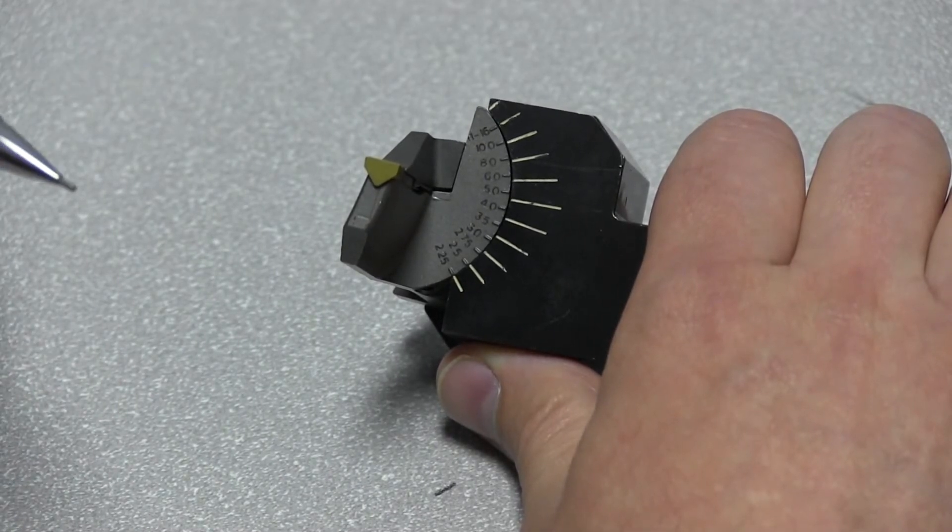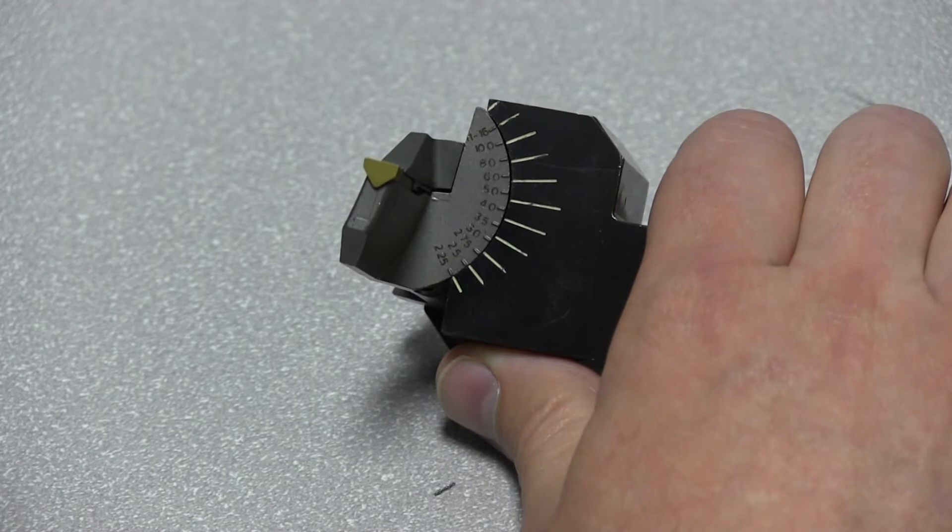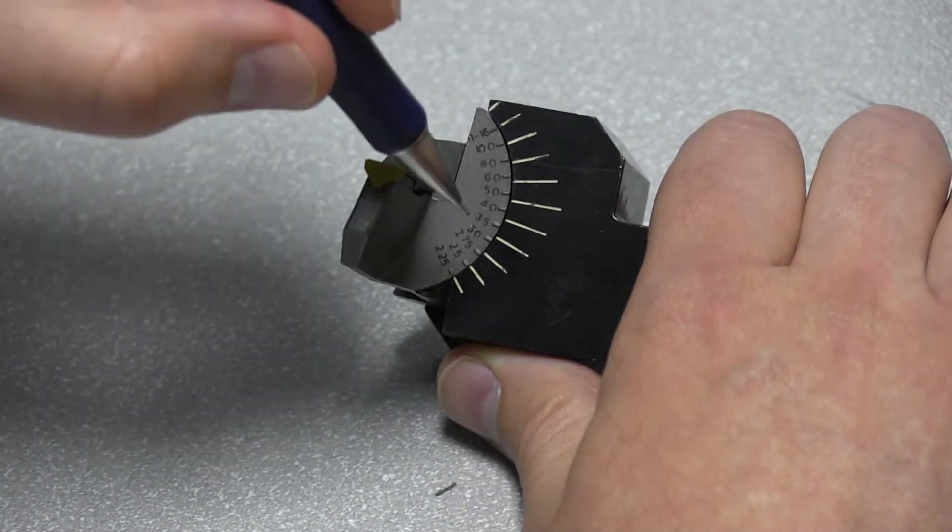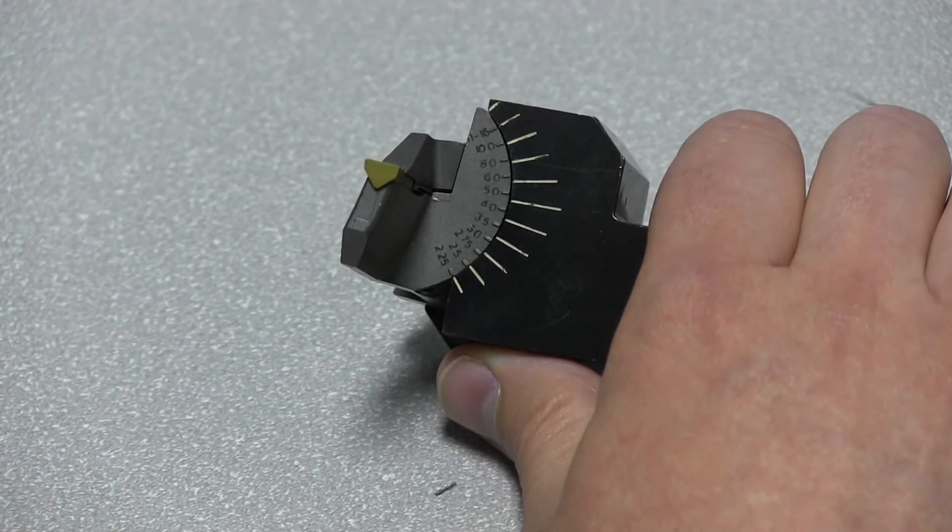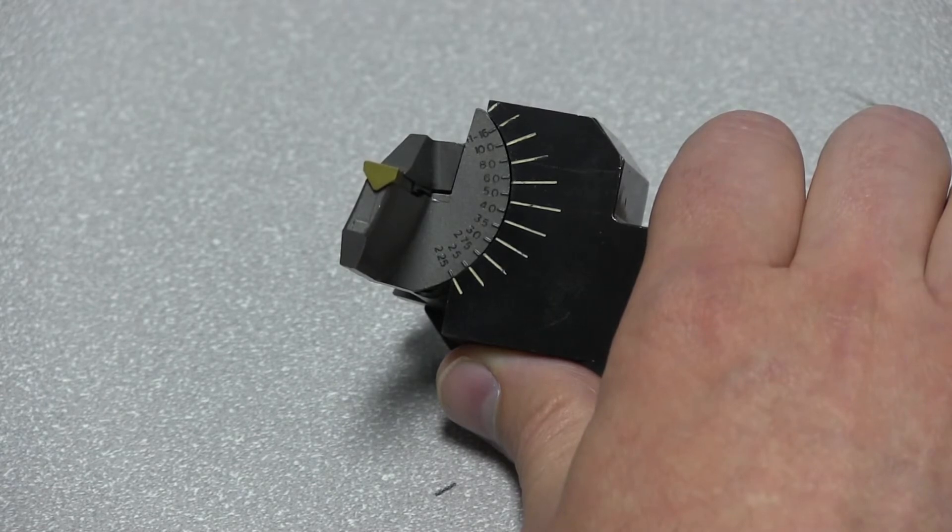First thing you need to do is identify what is the face grooving diameter that you're putting into your part. These dimensions we show on this cartridge would be your major diameter or your outside diameter on your part itself.